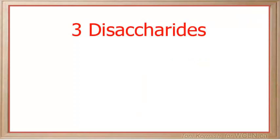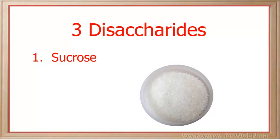The first disaccharide we're going to talk about is sucrose. Sucrose is the scientific name for table sugar, and table sugar tastes sweet. So it makes sense that one of the building blocks for sucrose is fructose, the sweetest monosaccharide. And remembering that sucrose is a disaccharide made from two monomers, the other monomer or building block is glucose.